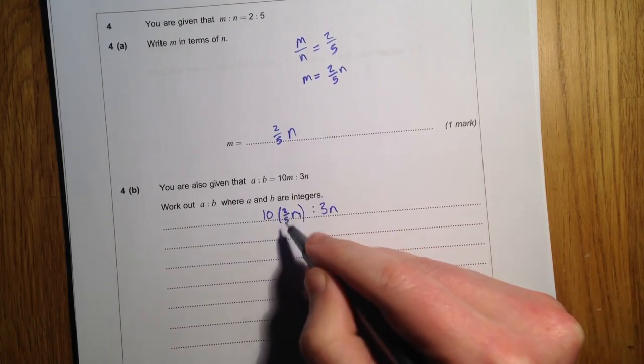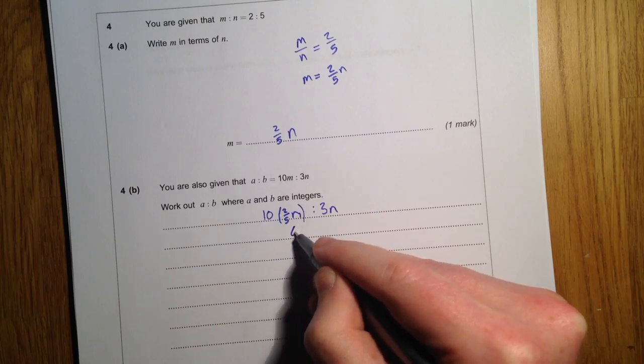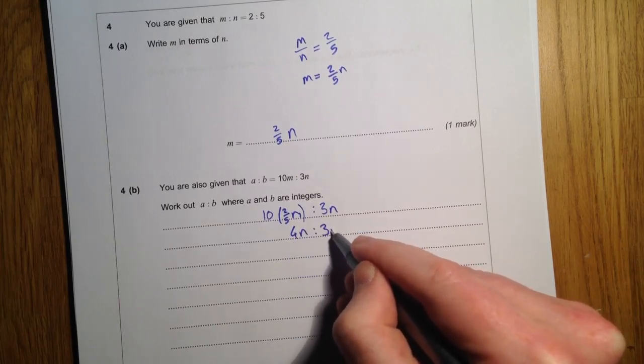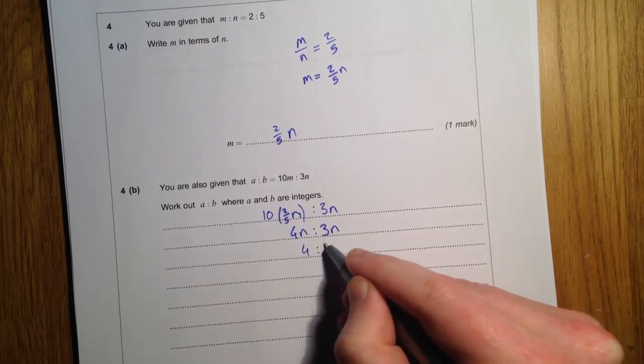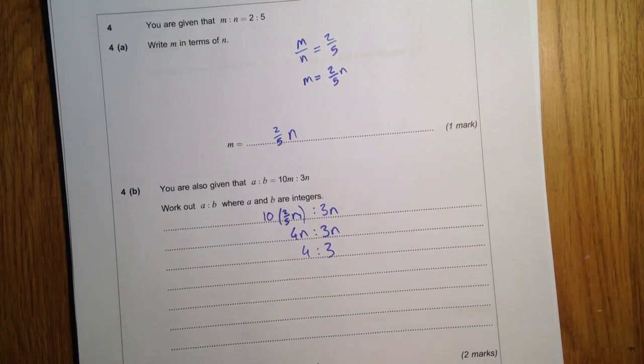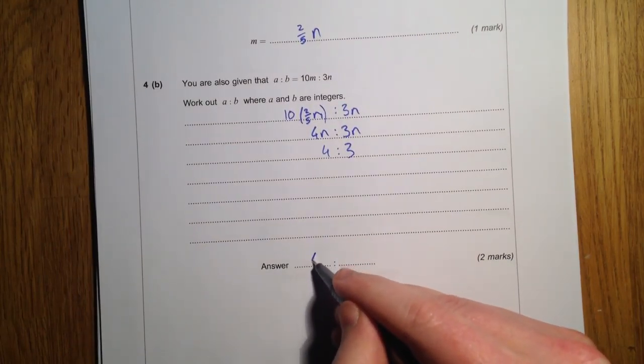So 10 times 2 fifths is 20 fifths, which is 4n to 3n. Divide both sides by n, so that is 4 to 3. So that's the ratio of 4 to 3.